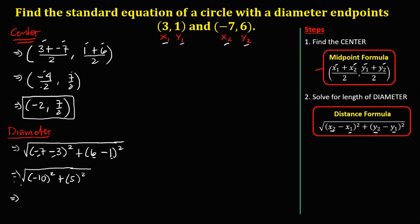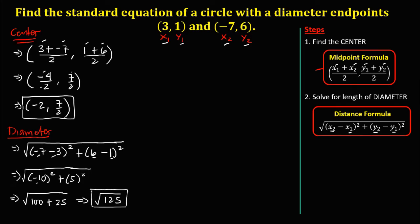Simplifying: negative 10 squared — that's negative 10 times negative 10 — equals positive 100. Plus 5 squared, which is 5 times 5, equals 25. So we have the square root of 100 plus 25, which is the square root of 125. Since 125 is not a perfect square, there is no need to simplify further.